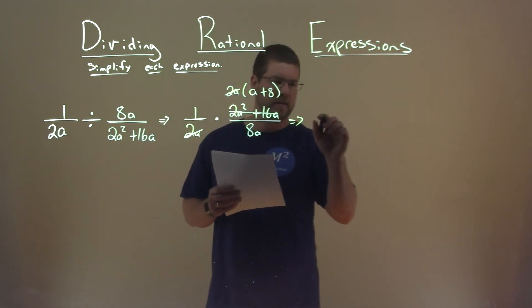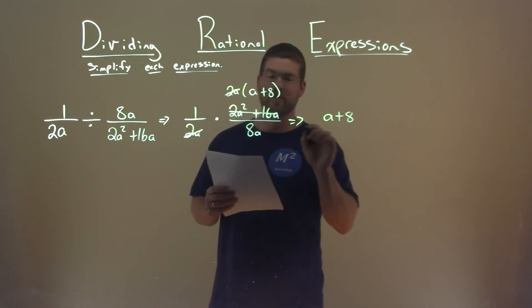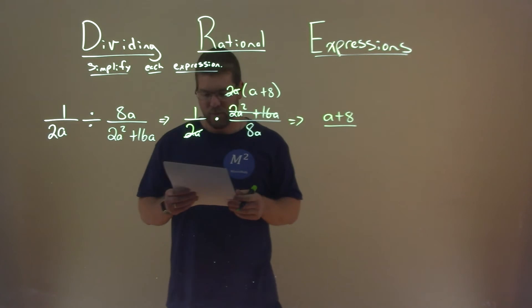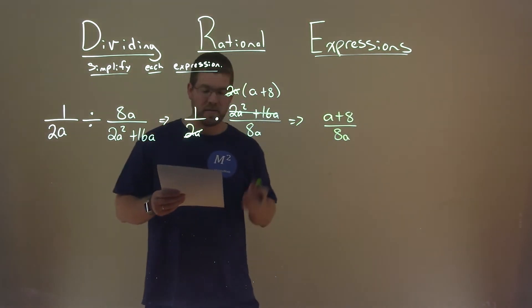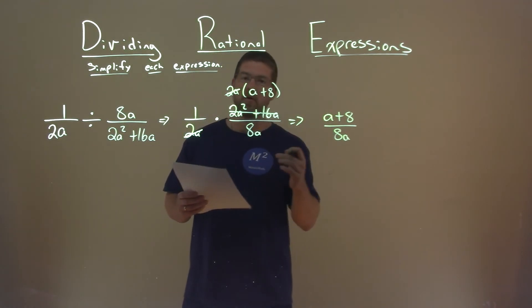So 1 times a plus 8 is a plus 8. Don't write it 2. In the denominator, we just have, well, 8a. And that's it. a plus 8 divided by 8a is our final answer.